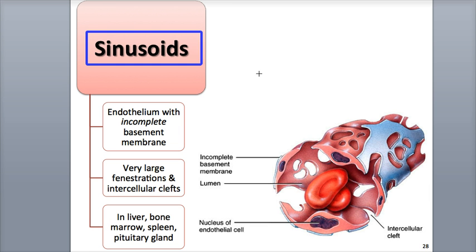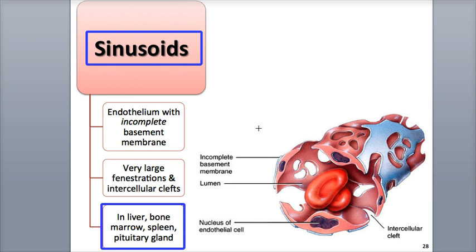The sinusoids have a larger diameter than the other two capillaries and have very large fenestrations. Their basement membranes are incomplete or lacking and have wider intercellular clefts. These larger spaces allow bigger molecules like proteins and also blood cells to move from tissues into the blood. Sinusoids are found in the red bone marrow, the liver, the spleen, the parathyroid gland, adrenal gland, and the anterior pituitary gland.